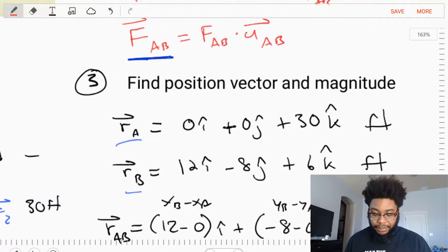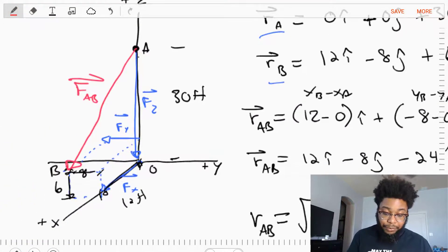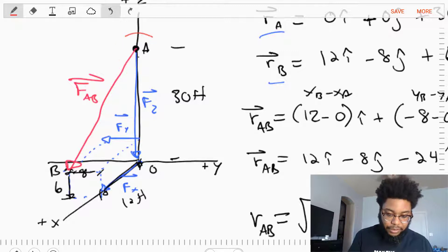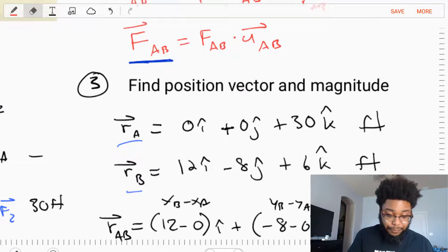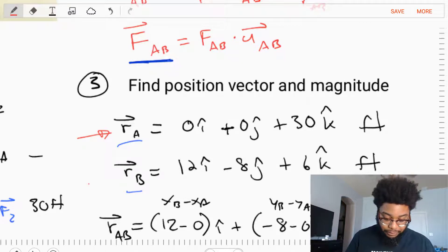The next step is to write out RA and RB, those position vectors, in Cartesian notation. We're simply going to read our diagram. Where is A? What is its XY and Z position? Where is B? What is its XY and Z position? And from that, create the following Cartesian vectors. Our A is at 0I plus 0J plus 30K feet. And our B, its position, is at 12I minus 8J plus 6K feet.